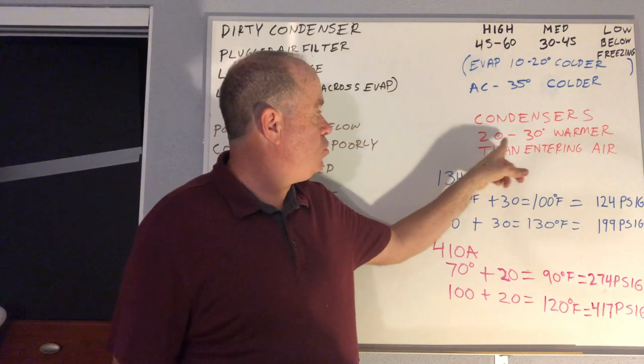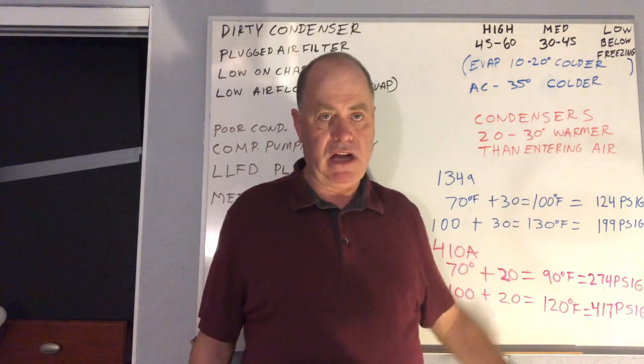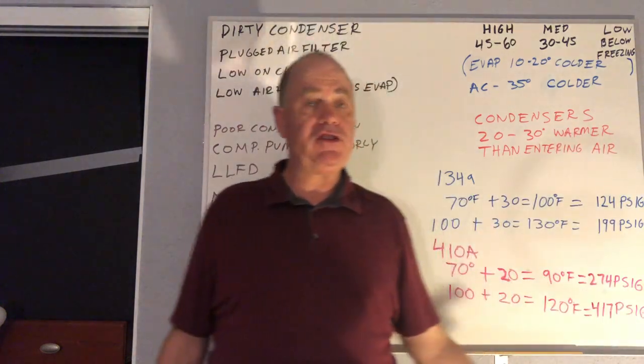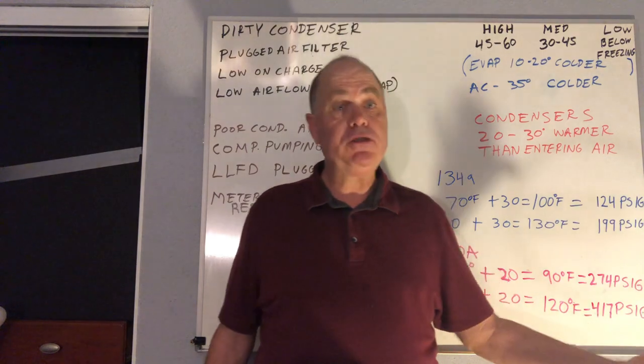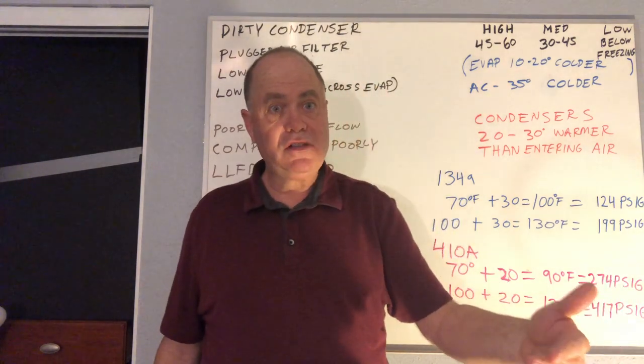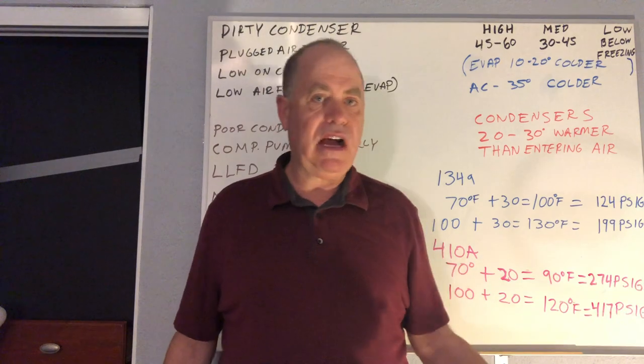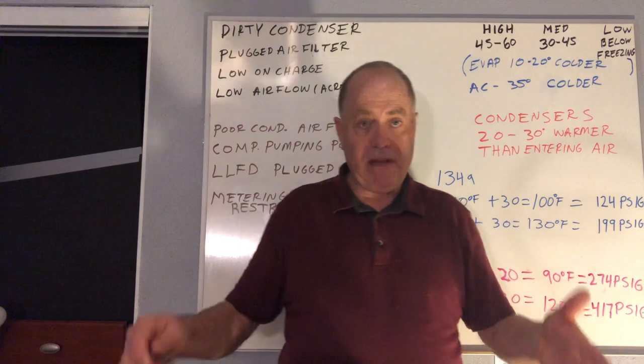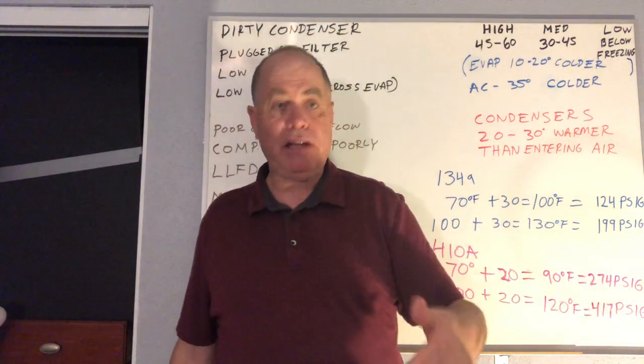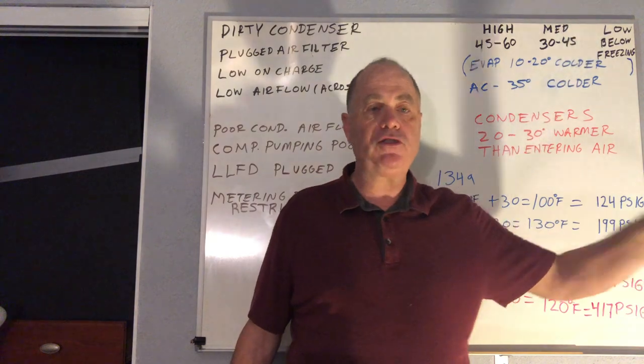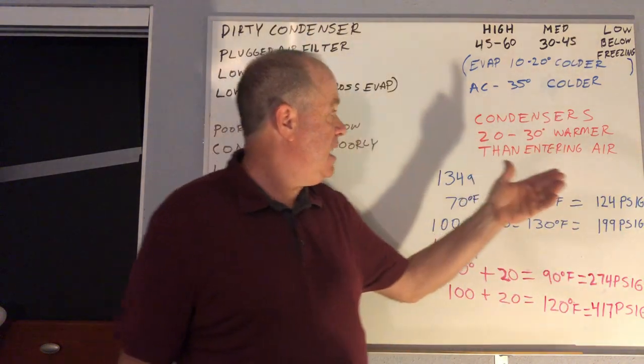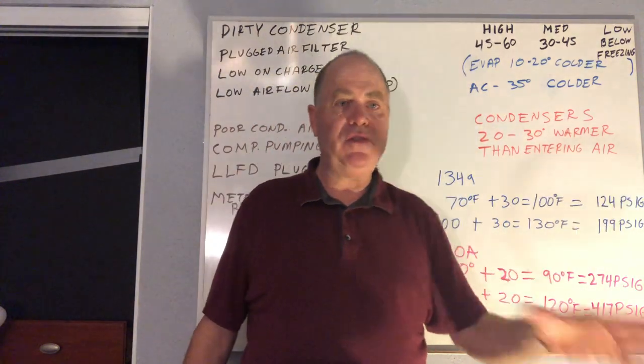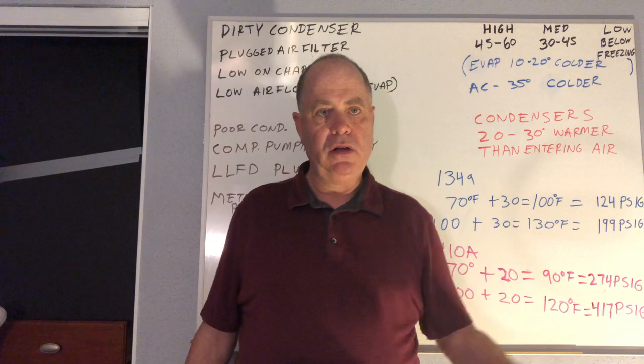At all times. Also, because the condensers are always operating in the conditions they operate at. The air entering in your kitchen through your refrigerator condenser is pretty stable. And outside air temperatures, it would be very rare for the outside air temperature to ever be dropping more than one degree every 15 minutes or rising one degree more than every 15 minutes. And so everything is more stable and easier to look at.